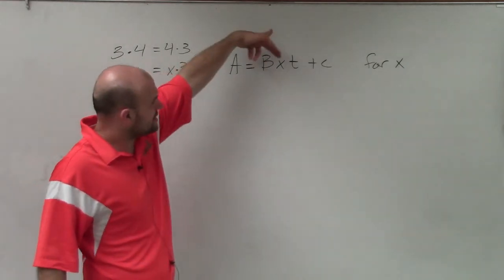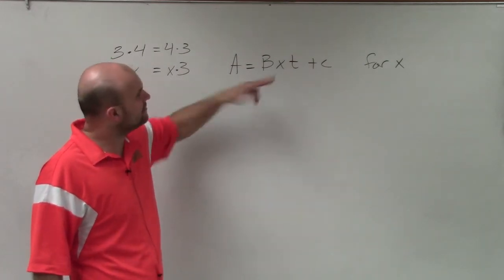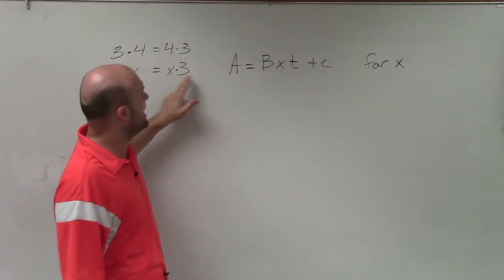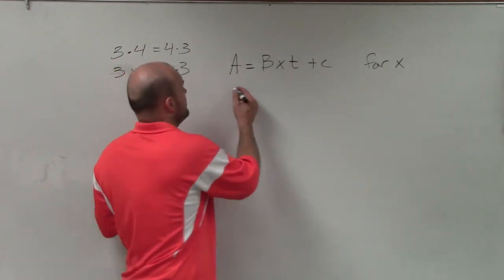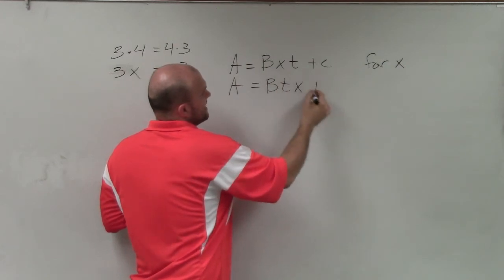So right now I'm trying to solve for x, and x is in between these two variables. To help me solve this problem, I say I don't like the variable being in the middle. I want the variable to be at the end that I want to solve for it. So I'll rewrite this example as A equals bt times x plus c.